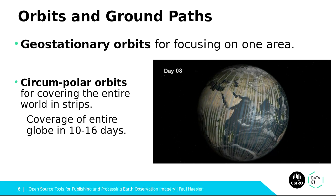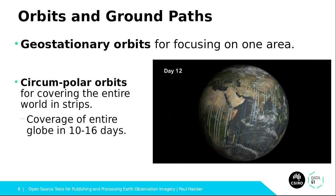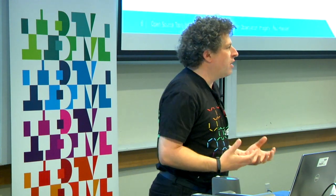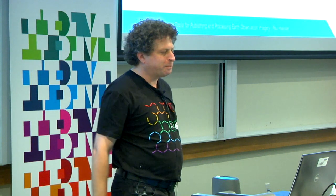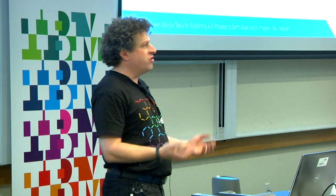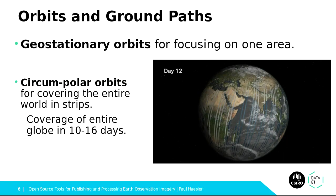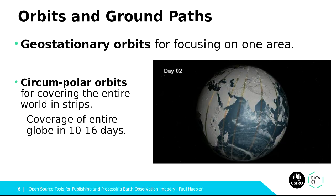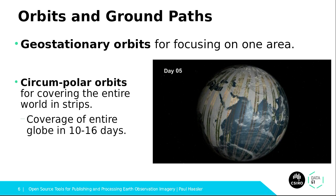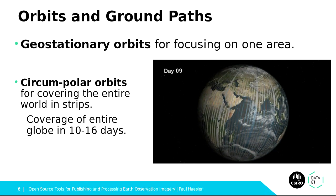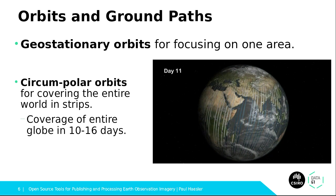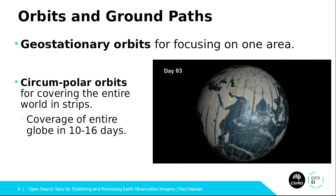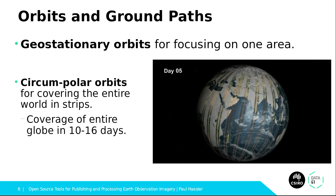Geostationary orbits are great for things like weather satellites. They have very high altitude so you can image quite a lot of area on the ground at once, but your ground resolution is not that great because you are much further away. If you want to capture high-resolution imagery of the entire surface of the Earth, you need something like a circumpolar orbit, where the satellite is orbiting over both poles and the Earth rotates slowly underneath you. You gradually build up these series of paths across the Earth, north to south, and over a period of a week or two they start to overlap and cover the entire Earth. The overlap is much higher at the poles and quite small at the equator because of the shape of the Earth.